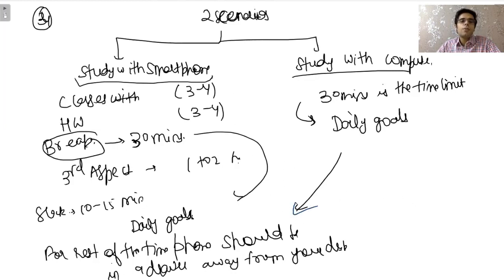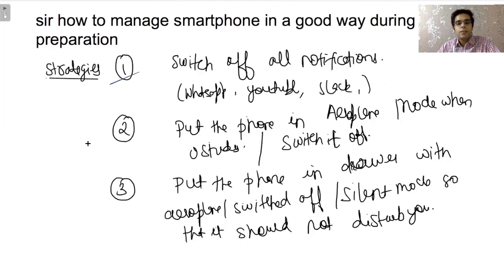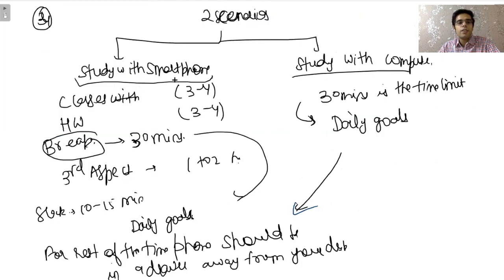This is how you need to manage your smartphone. Switch off your notifications, put phone in airplane mode or switch it off or silent, keep it away from you in a drawer or cupboard. Two scenarios: you study with it or you study with computer, then not more than 30 minutes. Include that in daily goals. Even if you study with it, 3-4 hours class or homework, then third aspect and some time for Slack. Then break is 30 minutes for random YouTube, Instagram, Facebook, although that is not required. Rest of the time it should be in the drawer away from your desk. These are the ideal scenarios if you can manage that.